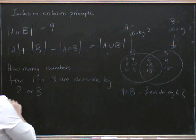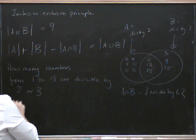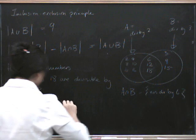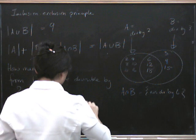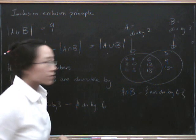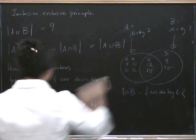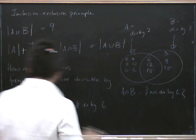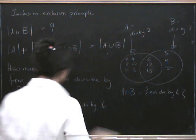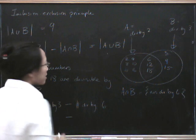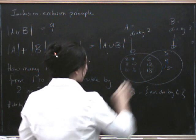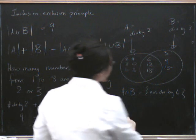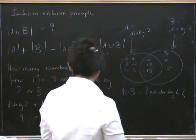So how do we count them? We take the number of numbers divisible by 2, add it to the number of numbers divisible by 3, and subtract the number of numbers divisible by 6, because that's divisible by both 2 and 3. We know there are 9 numbers divisible by 2 up to 18, and 6 numbers divisible by 3, and then we subtract the 3 numbers divisible by 6. So that's 9 plus 6 is 15, take away 3, which is 12. And we can check that there really are 12 numbers altogether up there.